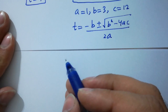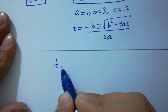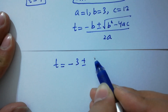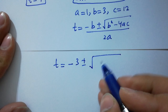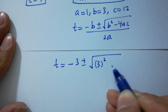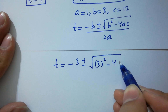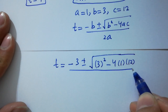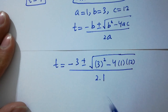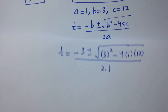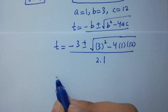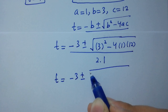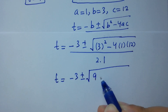Putting the values: t equals minus 3 plus or minus square root of 3 square minus 4 times 1 times 12, over 2 times 1. So t equals minus 3 plus or minus square root of 9 minus 48, over 2.